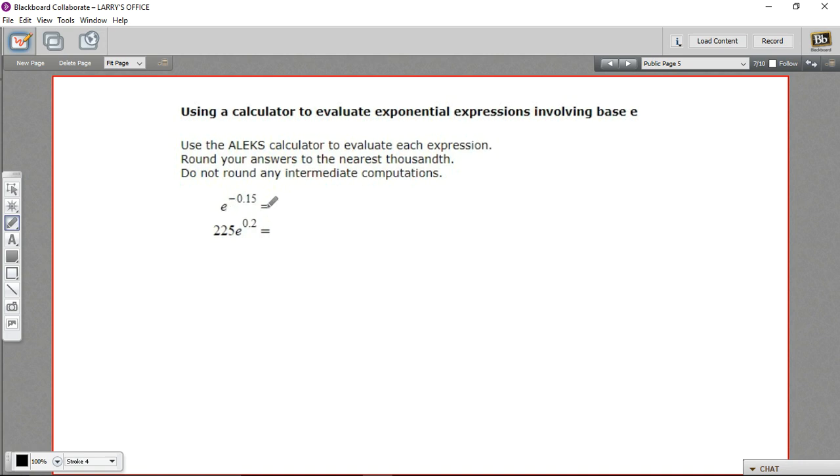So when we see e to the negative 0.15, that's not a variable. That's a specific number taken to this specific power. And we should be able to do that pretty easily using a calculator.